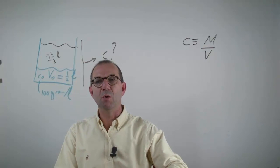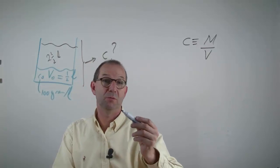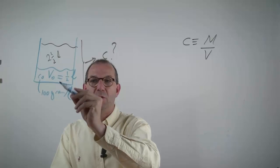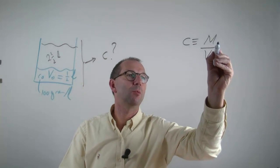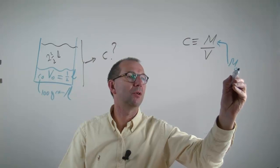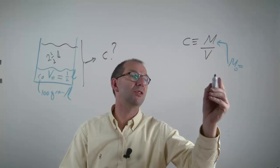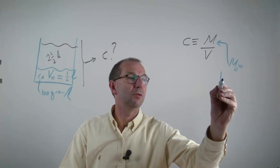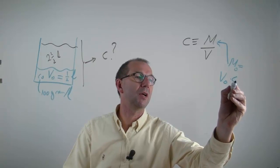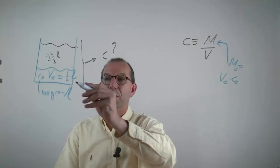We know that we have a certain mass of the toxic substance in the system, but that doesn't change. We add more water, but we don't add more substance. So the mass stays the same, and it can be computed by the same rule. M0 is the volume we started with — half a liter — times the concentration we started with — 100 grams per liter. So this is a number that we know.